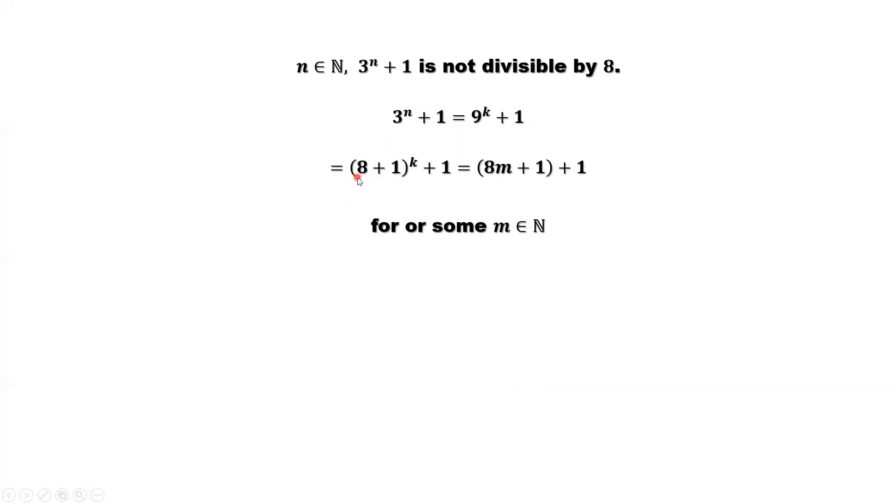9 is the sum of 8 plus 1. This is the key part, because our question is about 3 to the power of n plus 1 not being divisible by 8. So here we use 8 plus 1 and apply the binomial formula. In the expansion part, except the last term, that's 1 to the power of k, all the terms contain 8 as a factor. So we can rewrite the first part as 8m plus 1.